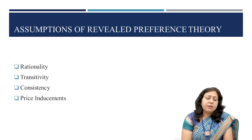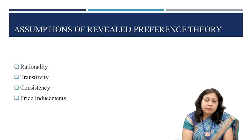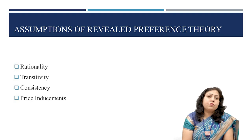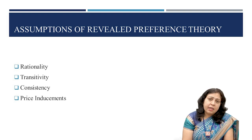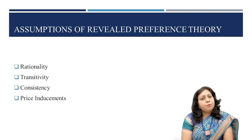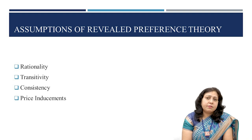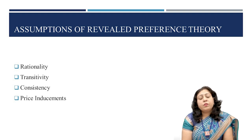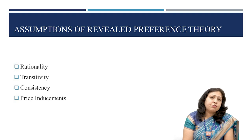The next assumption is consistency. Consumers are assumed to make consistent choices over a period of time. This means that if a consumer chooses bundle A over bundle B when both are available at the same prices in the market, the consumer will continue to make the same choice if confronted with the same or similar options and conditions again.